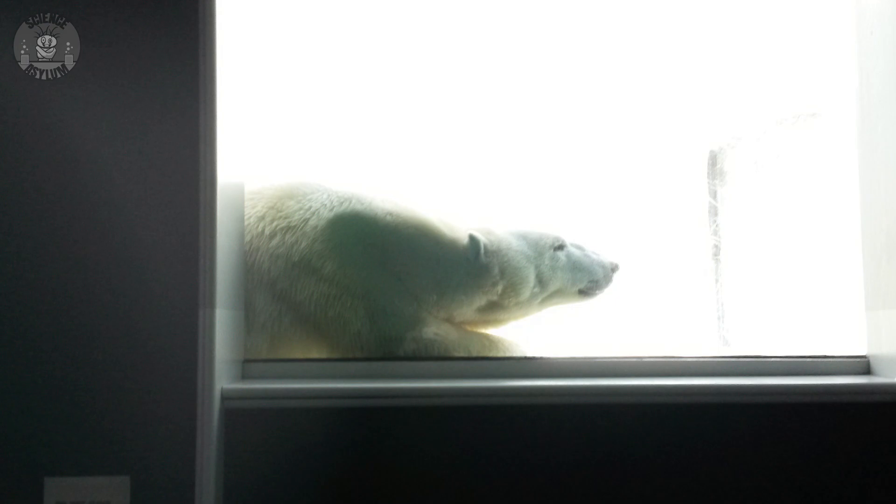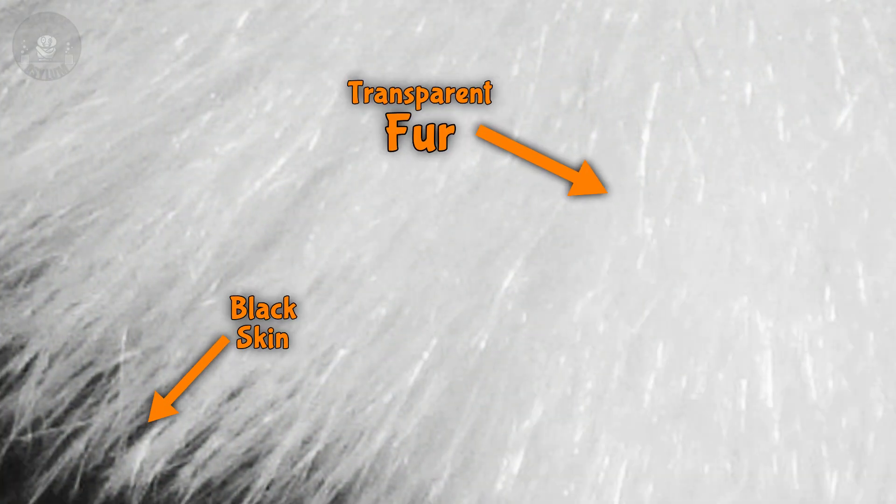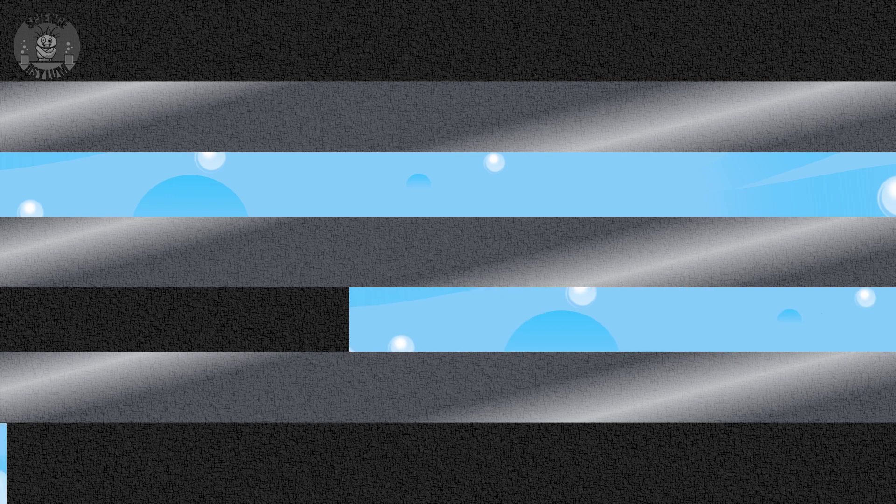The same thing happens with polar bear fur. It's also transparent. It's just that the fur is layered enough with air to maximize reflections. You can turn the reflection back down a bit by filling the air spaces with something else, like water, which is exactly how the wet t-shirt effect works. The point is, objects don't have color. Light does.